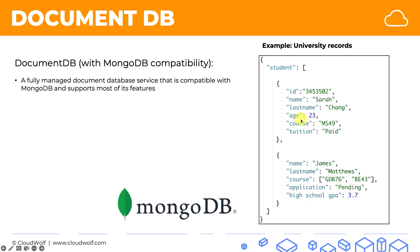As you can see, document storage in JSON format is different from our standard relational database type of storage. It has more flexibility and is therefore used in different scenarios where it can provide certain benefits. That's an example of document storage.